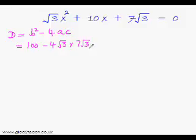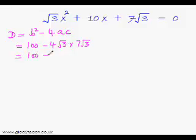So now simplify this part — multiply the number part with the number part and the root part with the root part. 4 times 7 is 28, and root 3 times root 3 will be just 3. The root will disappear. So 28 times 3 would be 84. This will become 100 minus 84, that is 16.